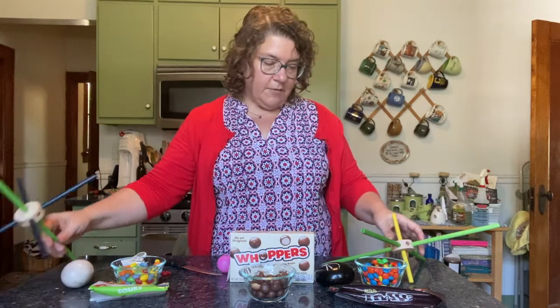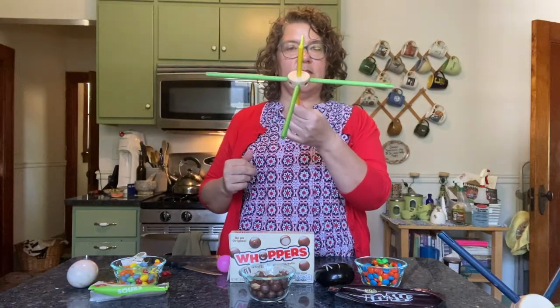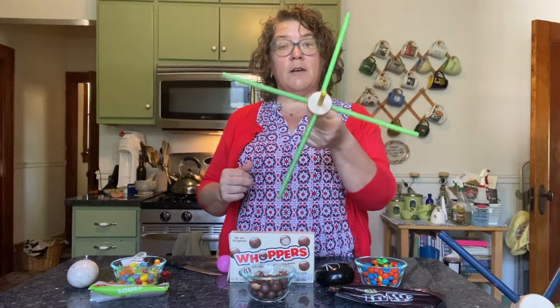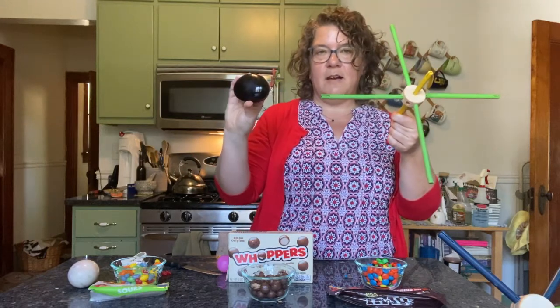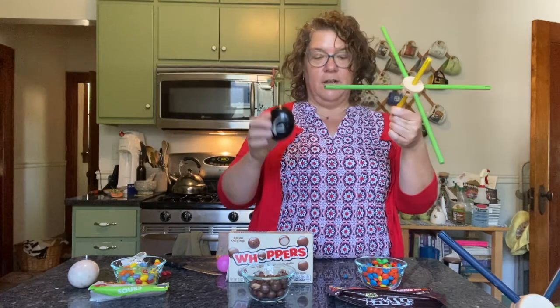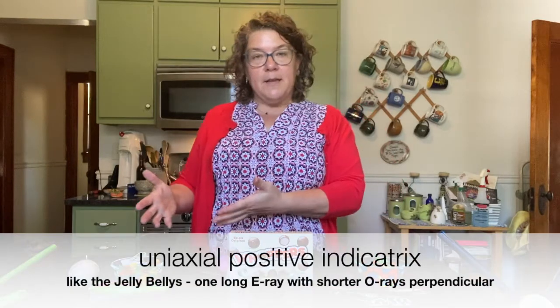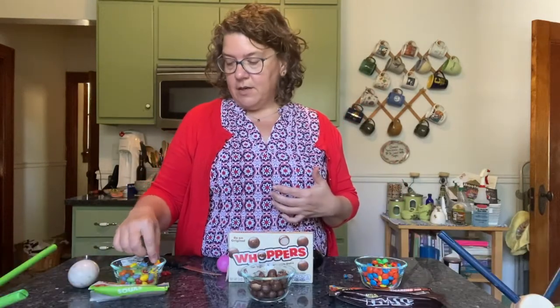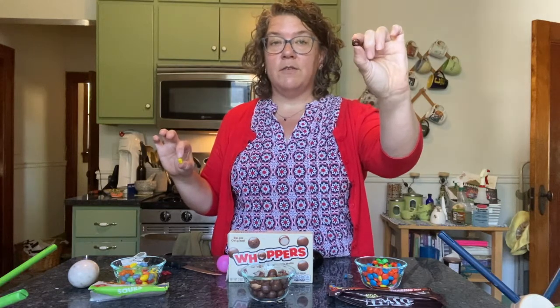If we have a uniaxial negative mineral, the unique axis is smaller than the ordinary axes, and you get something that looks like a flat circular shape. Thinking about these two shapes and two different candies: Jelly Bellies are like a positive uniaxial indicatrix — one long axis and two short axes. M&Ms are the negative uniaxial indicatrix. So here we have the two uniaxial indicatrices.